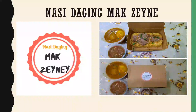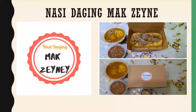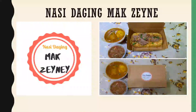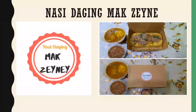As you guys can see in this slide, the left side is the logo of Nasi Daging Mak Zaini and the right side is a picture of the nasi daging itself. In the packaging there is nasi daging, curry telur, and air asam — this is the food that we will serve to our customers.